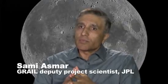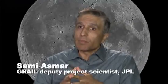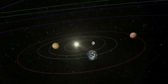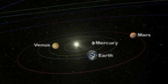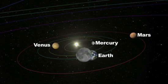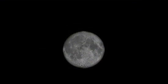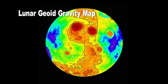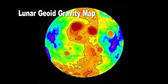Understanding how the moon has developed would really help us in understanding how the other planets in the inner part of the solar system — the rocky planets — have also developed. The purpose of the GRAIL mission is to investigate the interior structure of the moon.